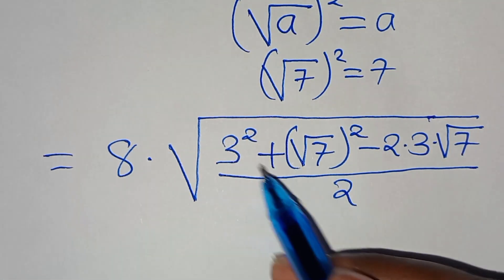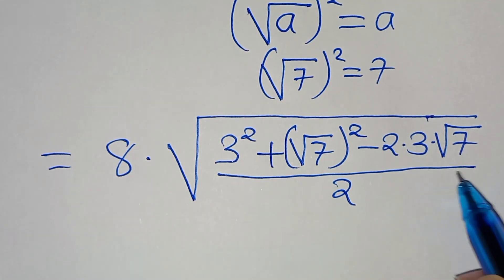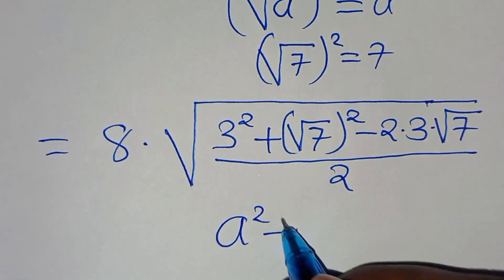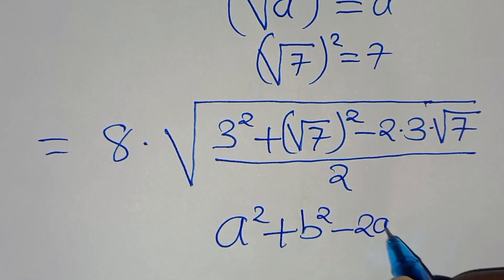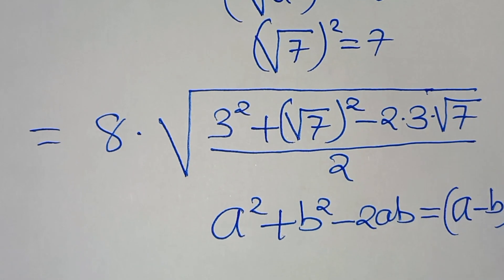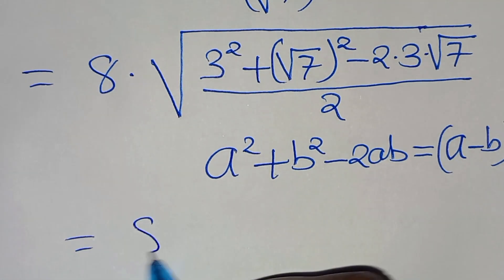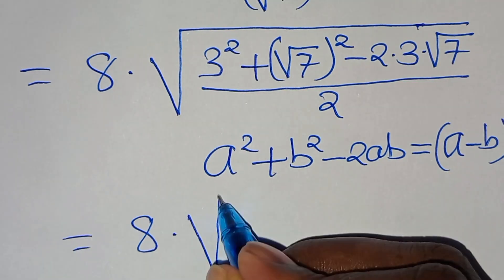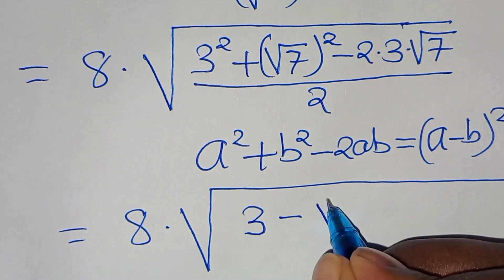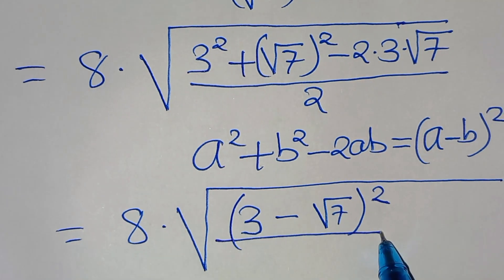In the numerator, 3 squared plus square root of 7 squared minus 2 times 3 times square root of 7. This is in the form of a squared plus b squared minus 2ab, which we can express as a minus b raised to the power of 2. Applying this algebraic identity, we have 8 multiplied by the square root of 3 minus square root of 7, everything raised to the power of 2, all divided by 2.